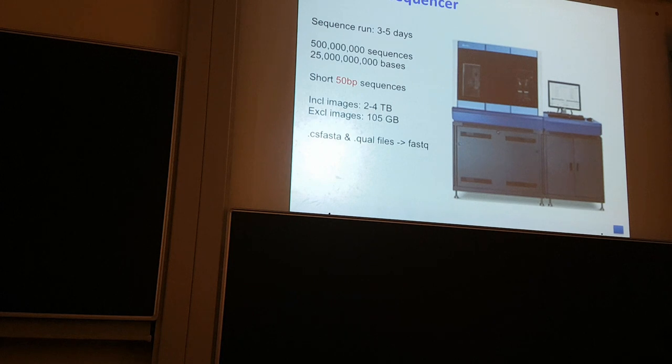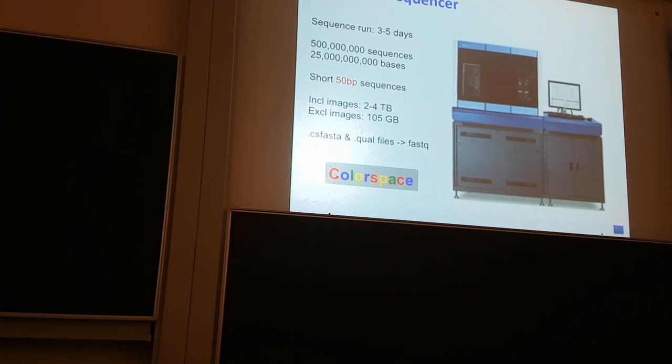We sequenced everything on a solid machine. I don't know how aware you are of the different types of sequencing machines. In this case, sequence run at that time still took three to five days. 500,000 sequences, 25 billion bases. Short sequences, 50 base pairs only. Nowadays you do much longer. We had, including the images which they don't store anymore, about two to four terabytes. Including the images, you had 105 gigabytes per run. At that time, the solid was really peculiar. They had a color space sequencing. I don't know if you had it in the course, but nobody does that anymore. Everything goes via Illumina. So I will skip this, but it was a pain at that time.